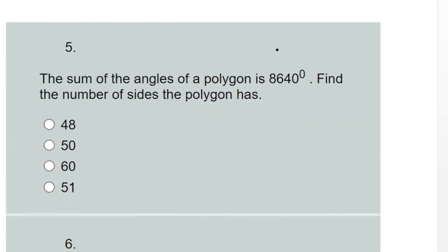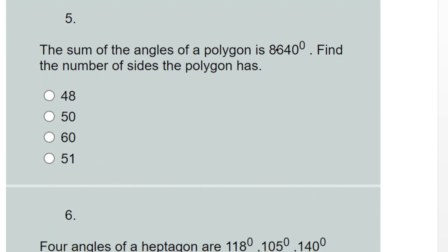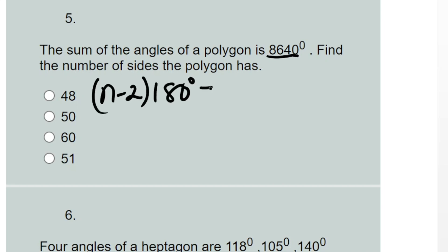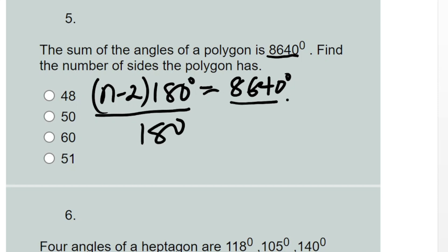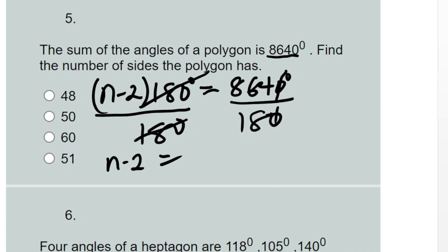Question five: the sum of angles of a polygon is 8640 degrees — find the number of sides the polygon has. We use (n minus 2) times 180 equals 8640. We divide both sides by 180, so 180 cancels, leaving n minus 2. We then divide 8640 by 180.